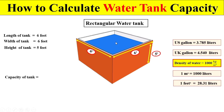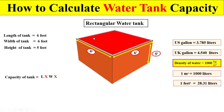Dear students, if you are interested to calculate the capacity of this water tank, first of all we multiply the length of the water tank with the width of the water tank to get the total surface area. Then we multiply this total surface area with the total depth of the water tank to get the total capacity.